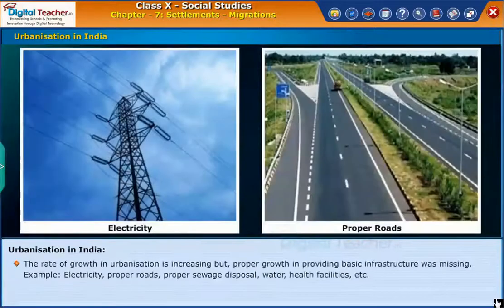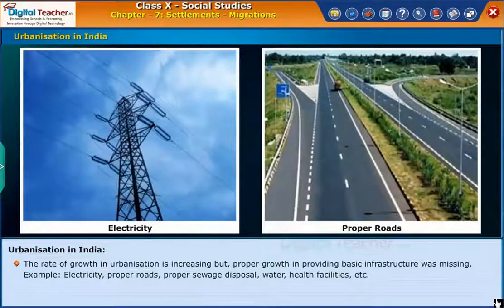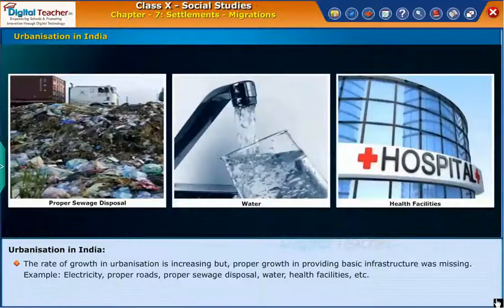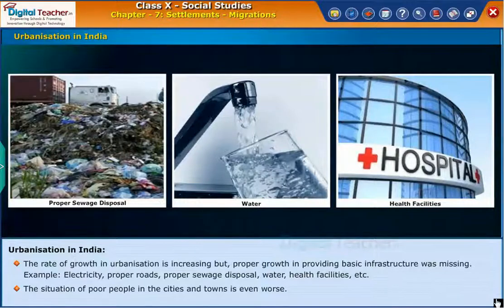The rate of growth in urbanization is increasing, but proper growth in providing basic infrastructure was missing — for example, electricity, proper roads, proper sewage disposal, water, health facilities, etc. The situation of poor people in the cities and towns is even worse.